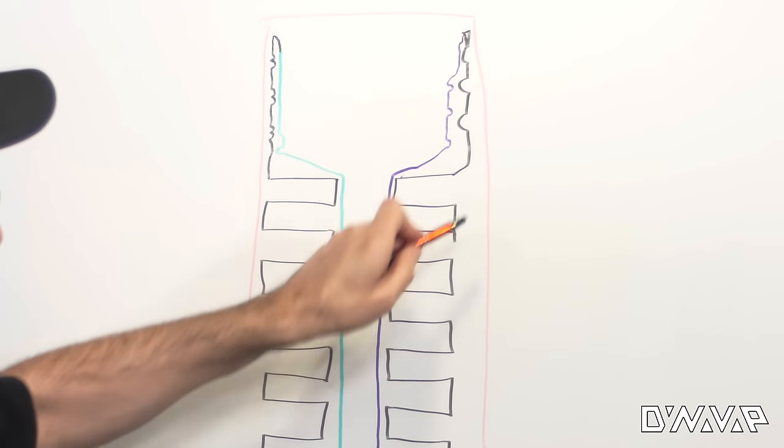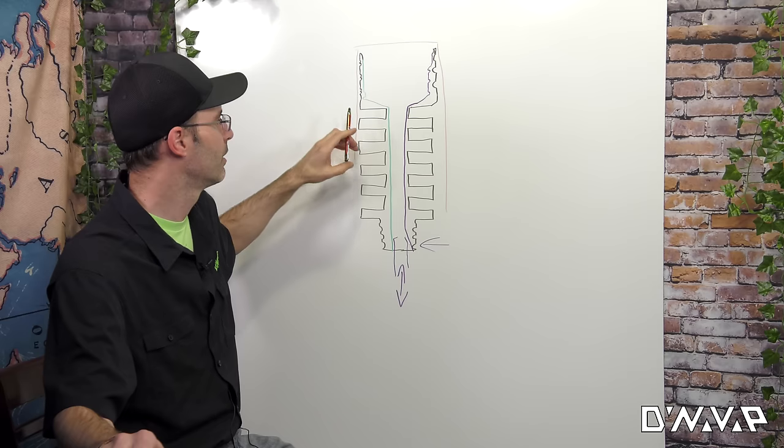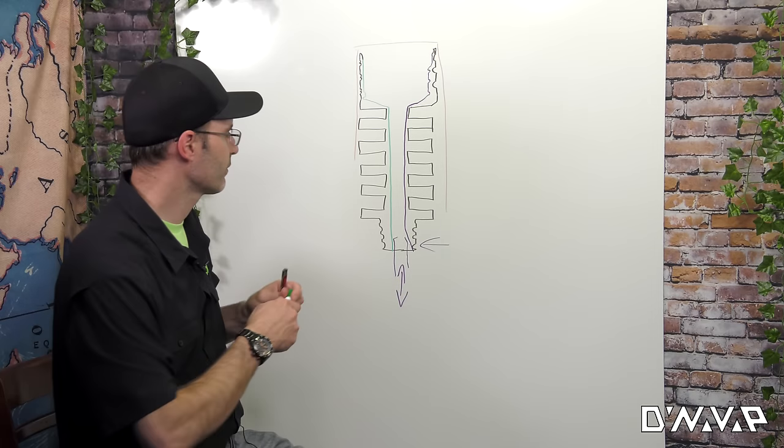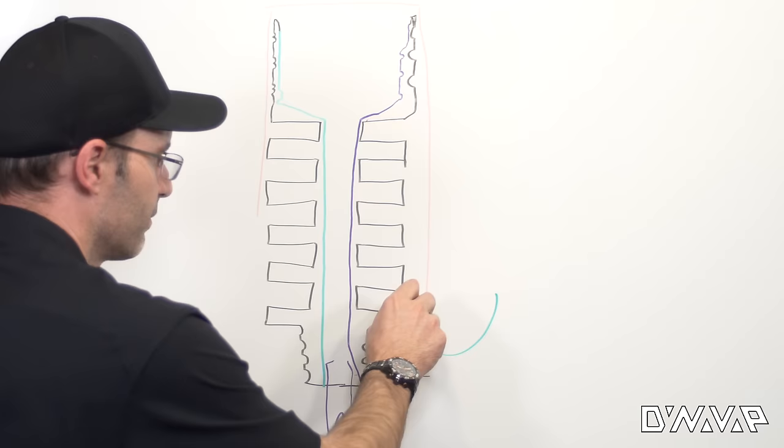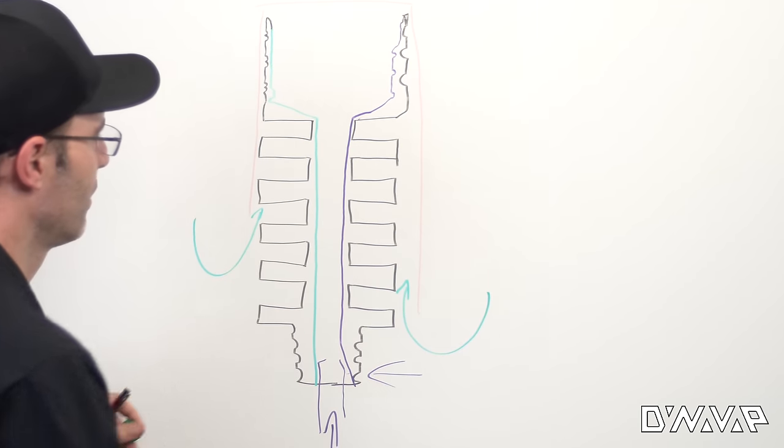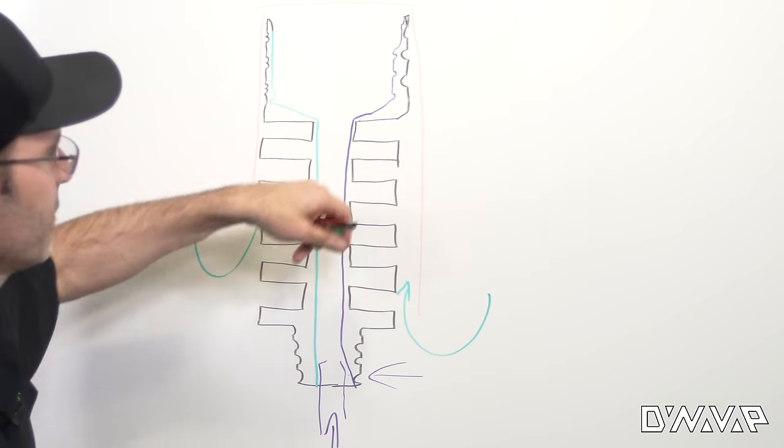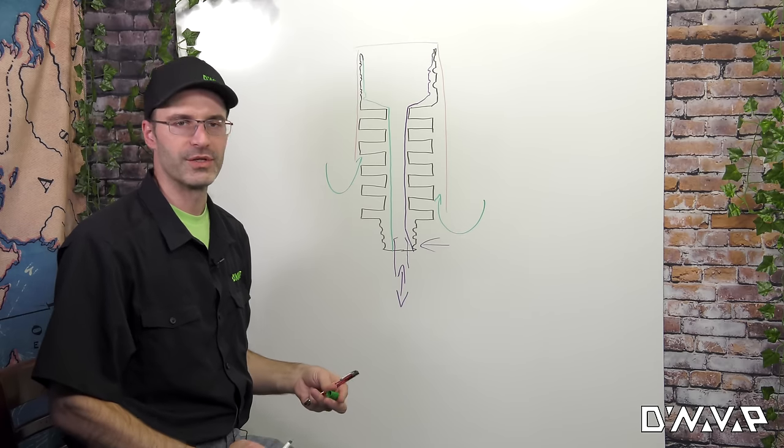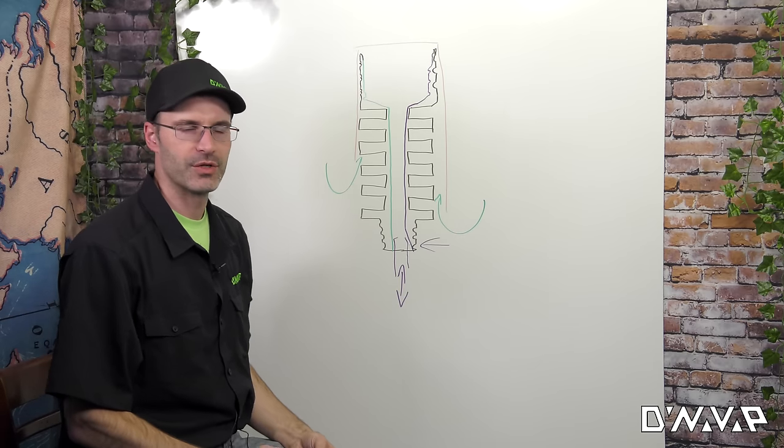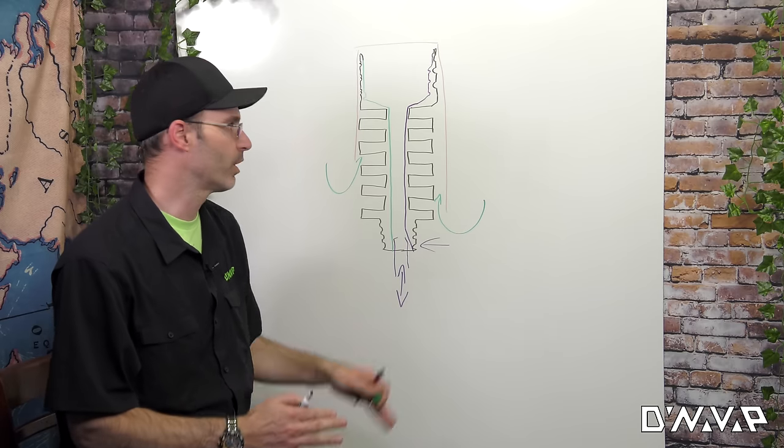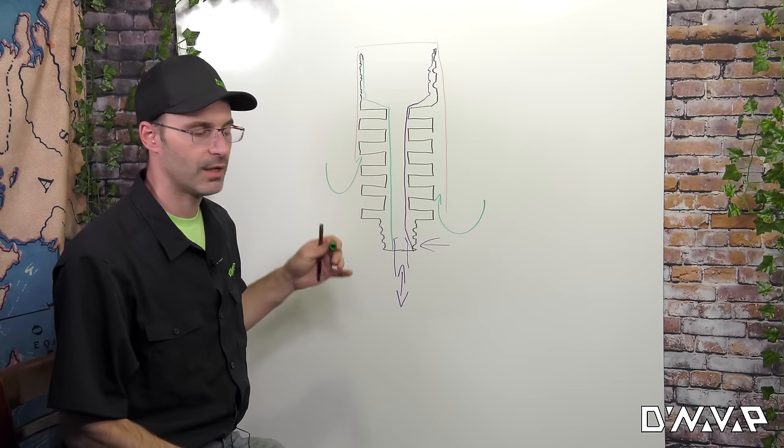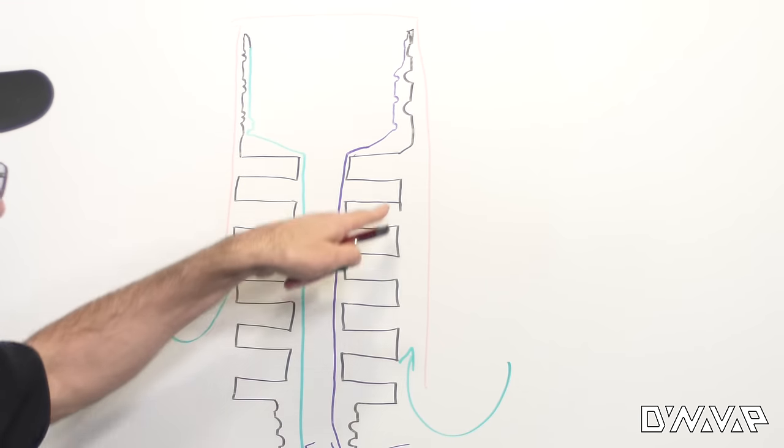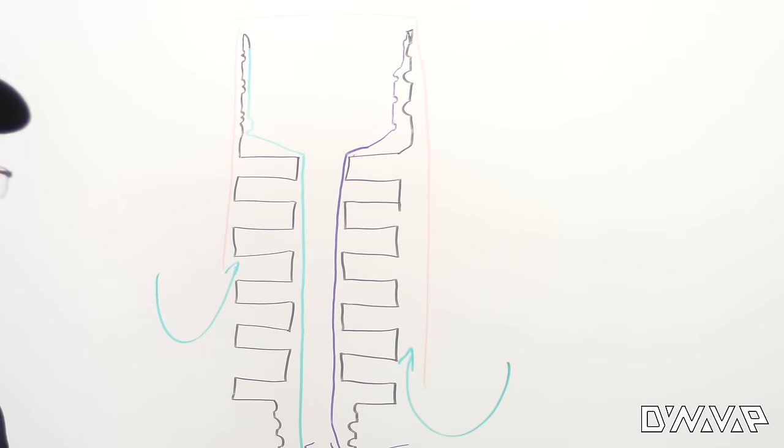This forms an air channel so that when outside air comes in, it's gonna pass over some of the fins and also pass through these helical channels around the tip, warming it up because the tip is gonna be very hot, somewhere in the neighborhood of 350 to 400 degrees depending on where you heated on your cap and how long it's been since you heard the heat up click. As that air passes through these channels, it gets heated up to convection temperatures.